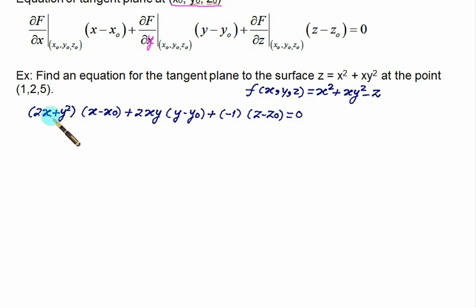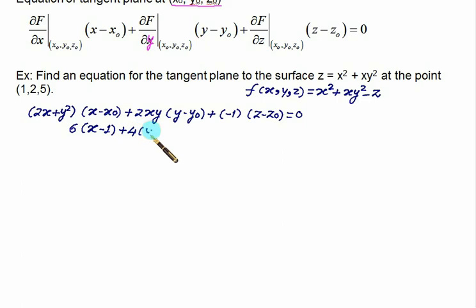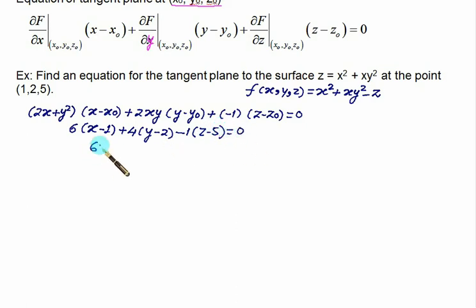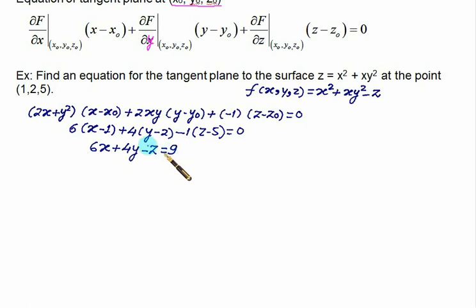At (1, 2, 5): 2(1) + (2²) = 2 + 4 = 6, and 2(1)(2) = 4. So the equation becomes 6(x − 1) + 4(y − 2) − 1(z − 5) = 0. Expanding and rearranging, we get 6x + 4y − z = 9. This is the equation of the tangent plane.